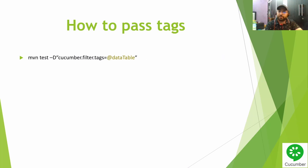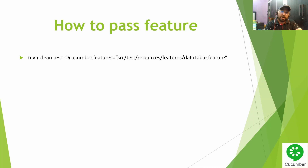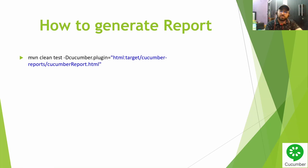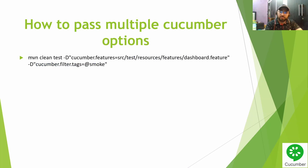Let me quickly recap what we covered: how to pass a particular tag using the Maven command, how to pass features to point to a specific feature file, how to execute a particular scenario by line number, how to generate additional reports via the plugin option, and how to pass multiple Cucumber options. Thank you for watching — please like, share, and subscribe!